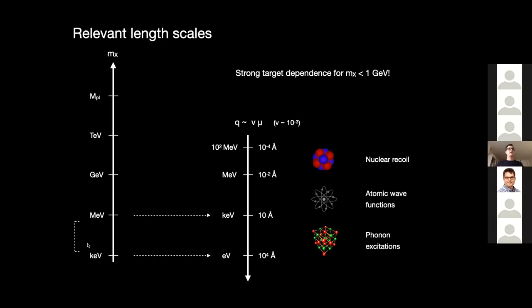Going even lower in mass, you effectively have to transition to a theory where you integrate out the nuclei themselves, because the wavelength of the scattering process becomes larger than the inter-particle spacing of the system — typically about an angstrom in a crystal. So you scatter coherently with a bunch of atoms and you're creating phonons. Our goal is to transition to a new effective theory where we integrate out the atoms and match onto the dark matter theory in the UV, getting an effective dark matter–phonon vertex in the Hamiltonian.